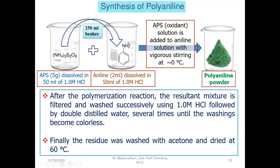Maintain the temperature at 0 degrees centigrade because the reaction is highly exothermic in nature. If you do not maintain low temperature, it may lead to the decomposition of the polyaniline formed. Therefore, maintaining 0 degrees centigrade and stirring is very, very important. After stirring for some time, the reaction gets completed and you will end up with a green color powder along with the HCl solution.